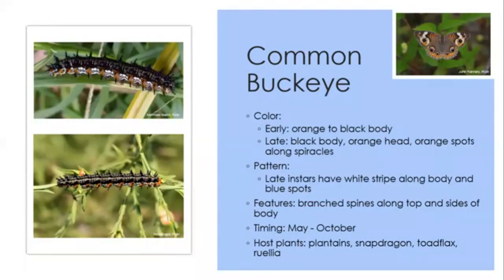The common buckeye caterpillar ranges in color from orange to black. Later instars have an orange head, orange spots along the spiracles, a white stripe along the side, often blue spots near the top, and black branched spines along the body. May through October you can find these caterpillars in your garden on snapdragons, ruellias, toad flax, and plantains.